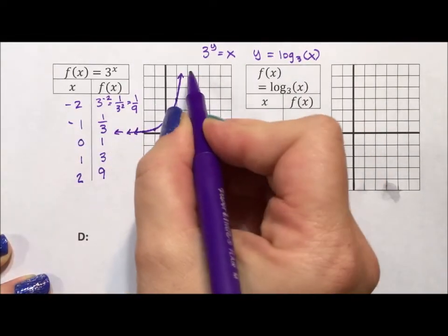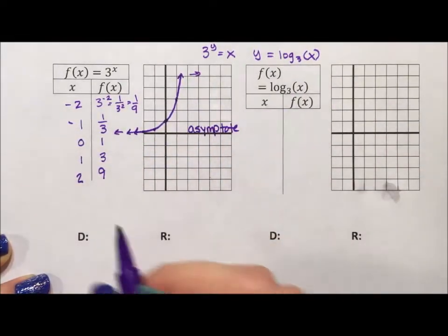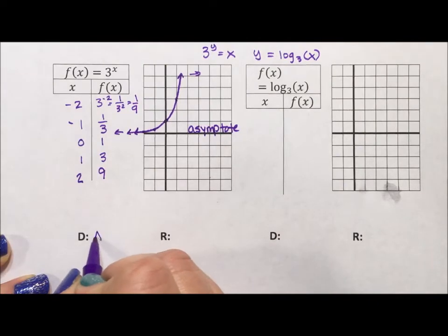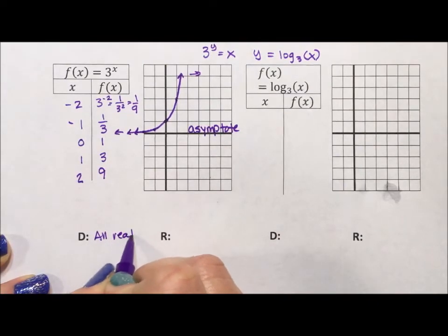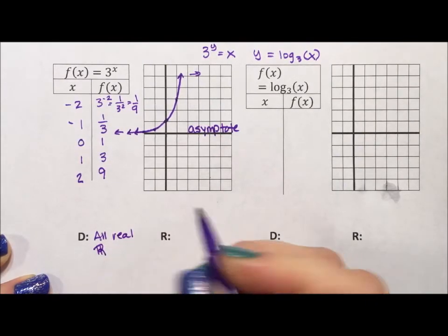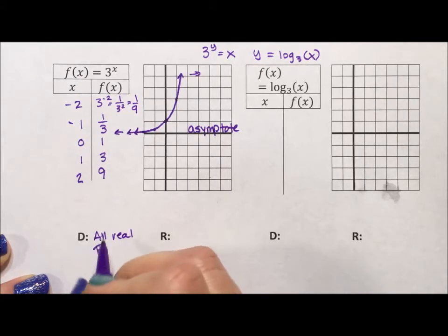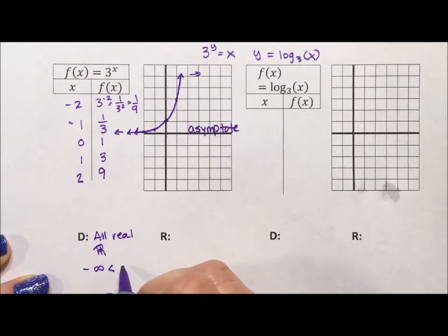Because of this, because this goes forever left and right, the domain of an exponential is all real. Now, I could write all real, I could do the double bar r, I could do negative infinity is less than x is less than positive infinity, or my preferred method is interval notation, negative infinity to positive infinity.